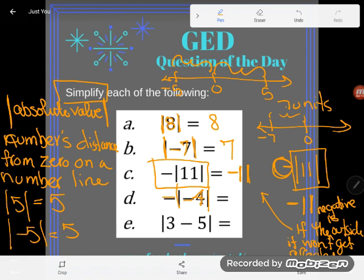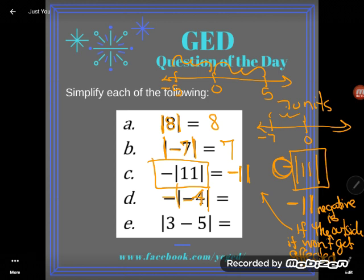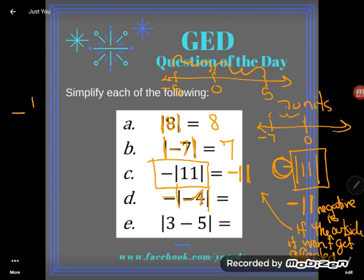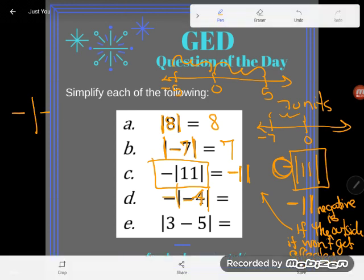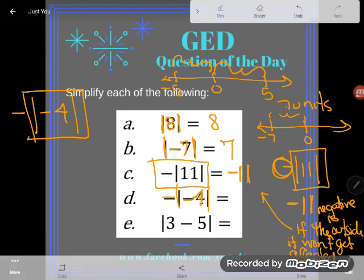So where can I write it? I need space. Here we go. The opposite of the absolute value of negative four. So let's deal with this inside four first.